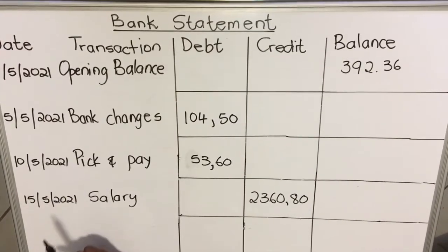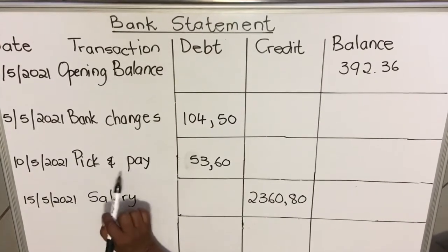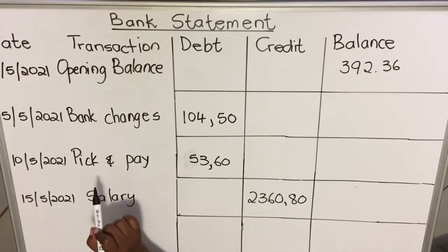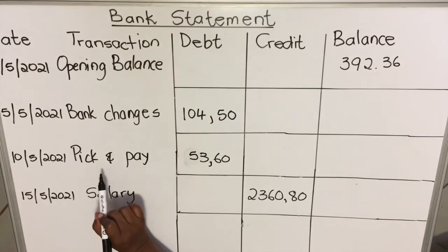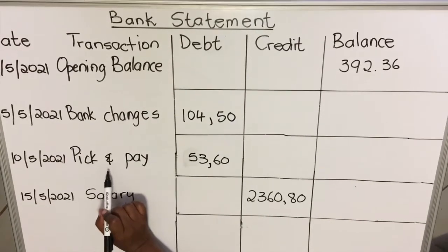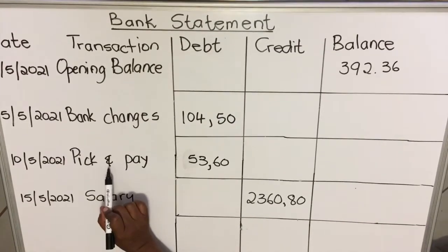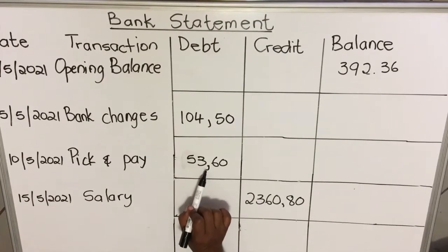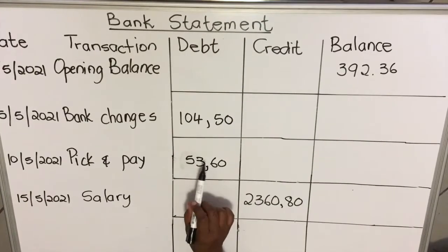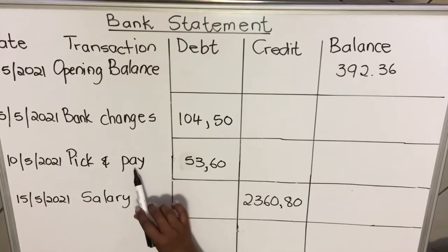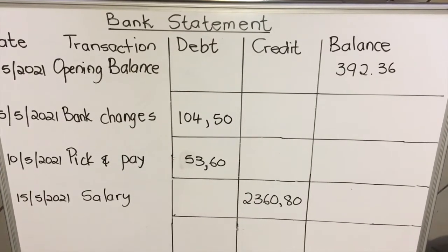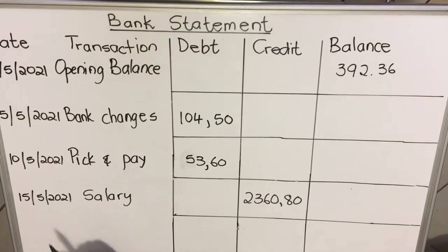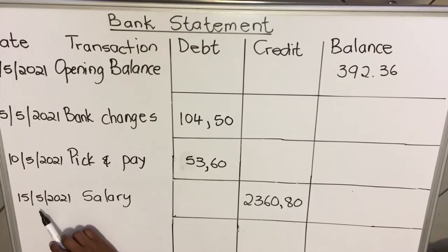The next transaction in this account happened on the 10th. What happened? Pick and Pay — meaning this person bought something at Pick and Pay, so money went out of the account. It's R53.60, debited because money left the account.